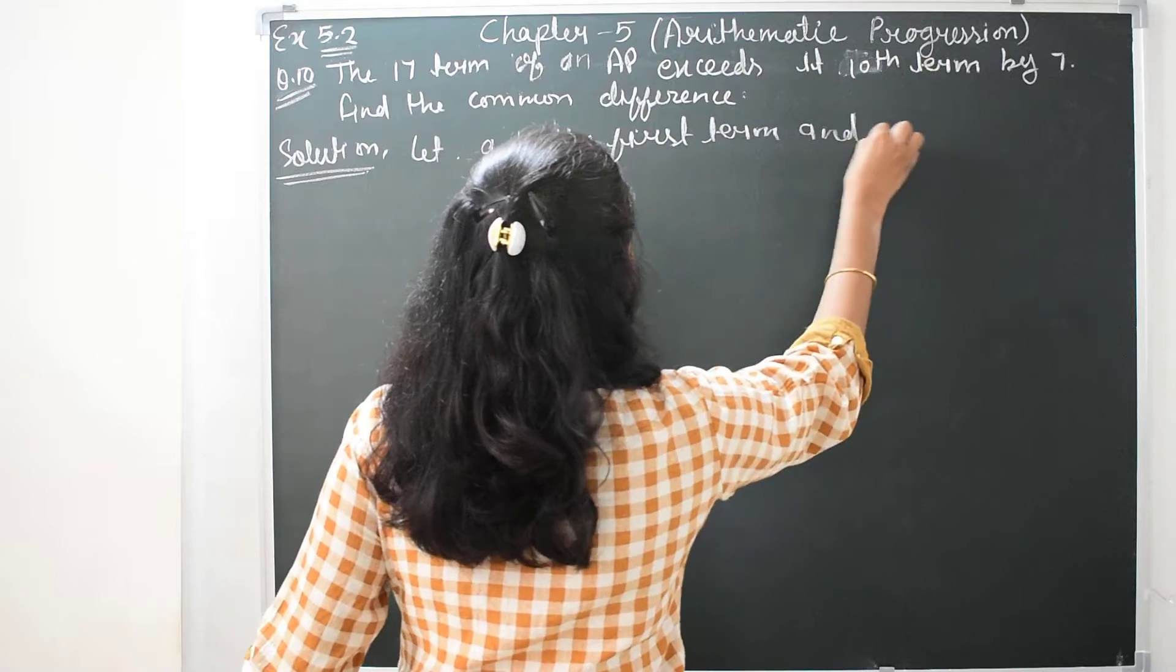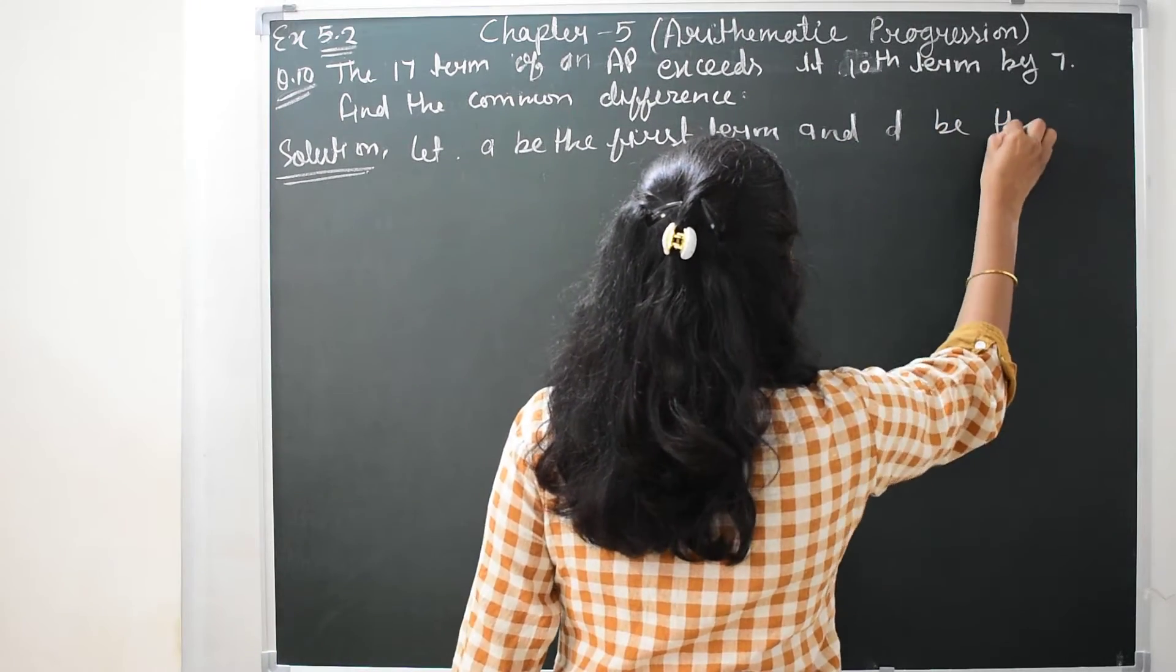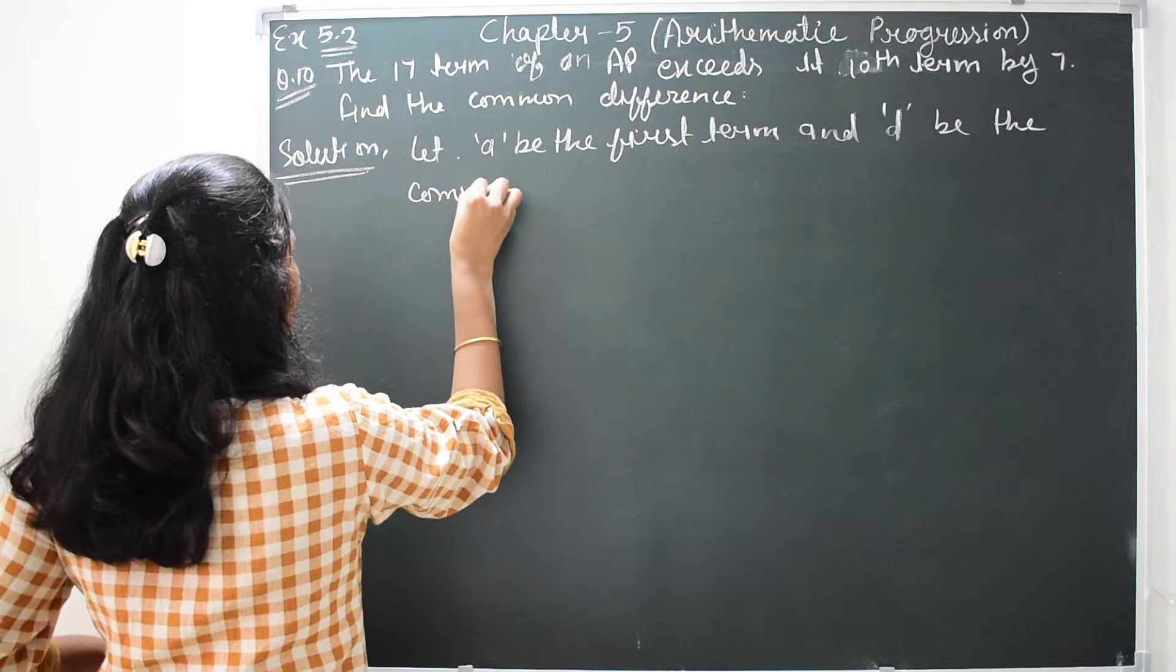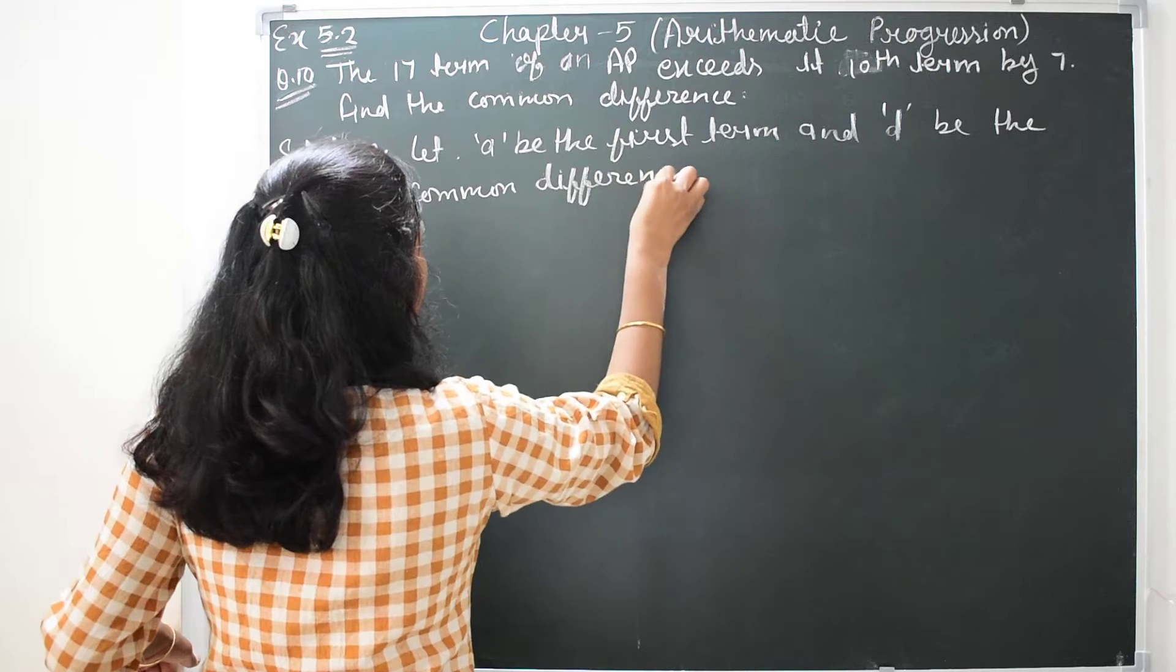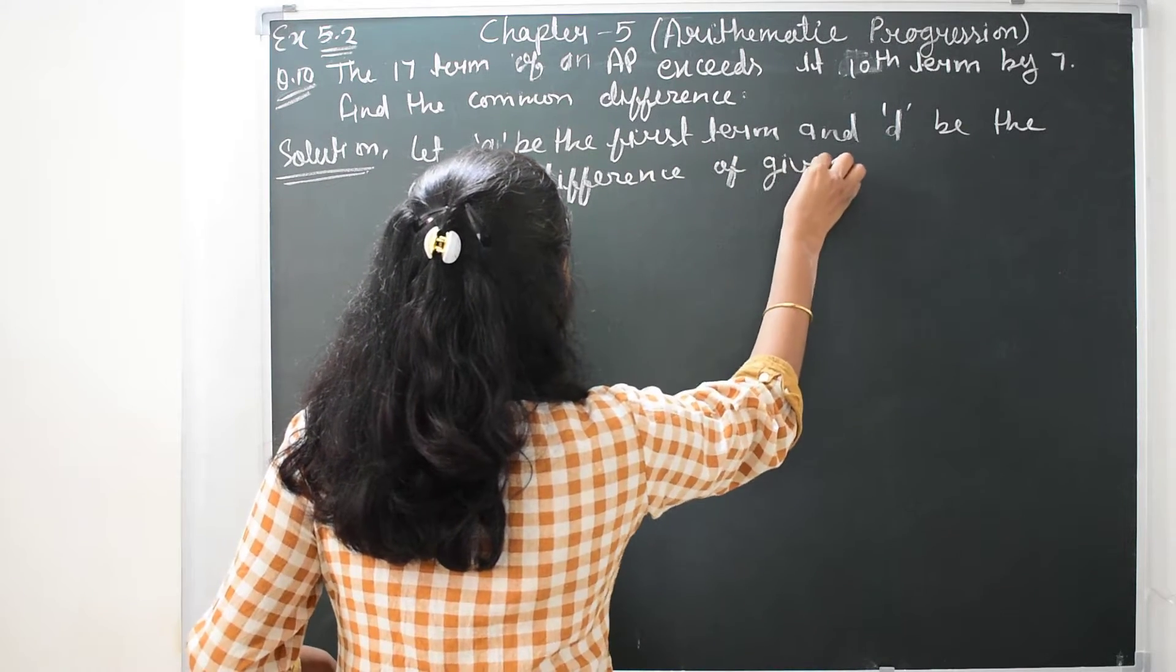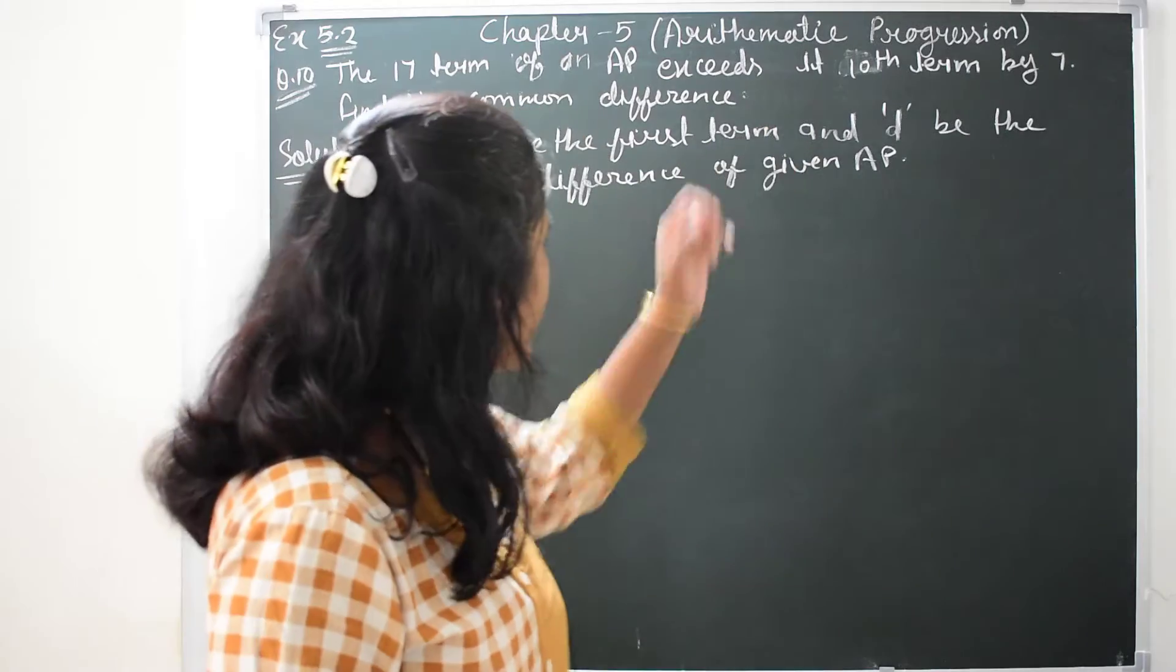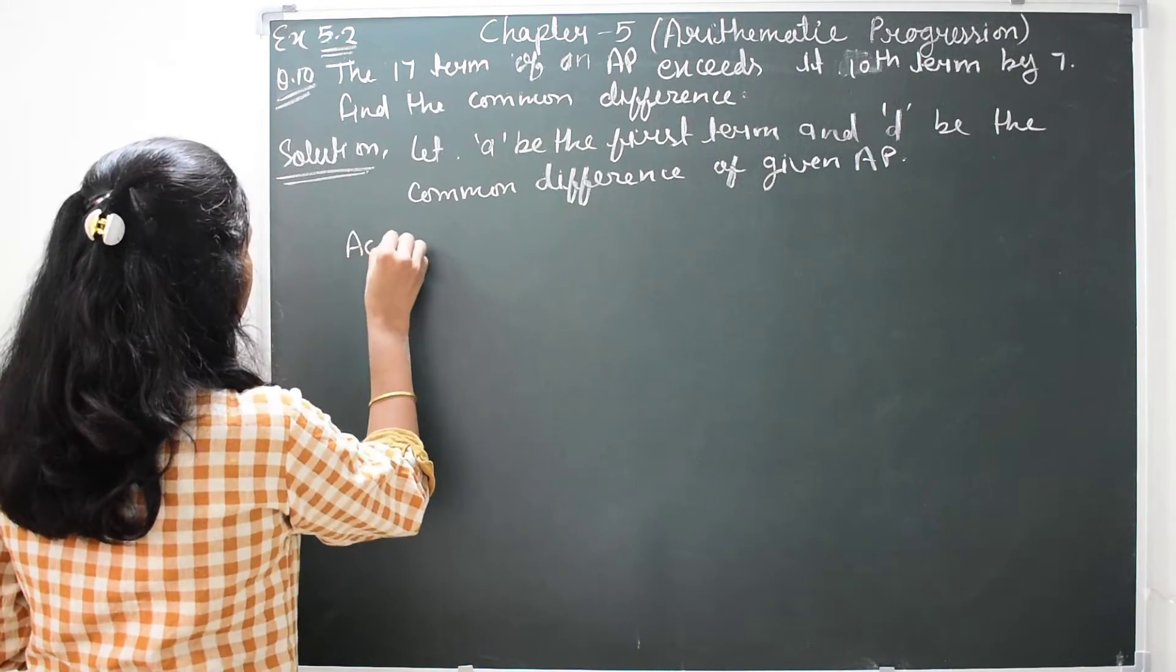And let D be the common difference of the given AP. We don't know what the AP is, but we know that A is the first term and D is the common difference. We need to find D. According to the question,